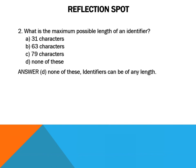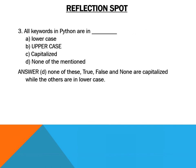Second question: what is the maximum possible length of an identifier? Options: 31 characters, 63 characters, 79 characters, or none of these. The answer is none of these, because identifiers in Python can be of any length.